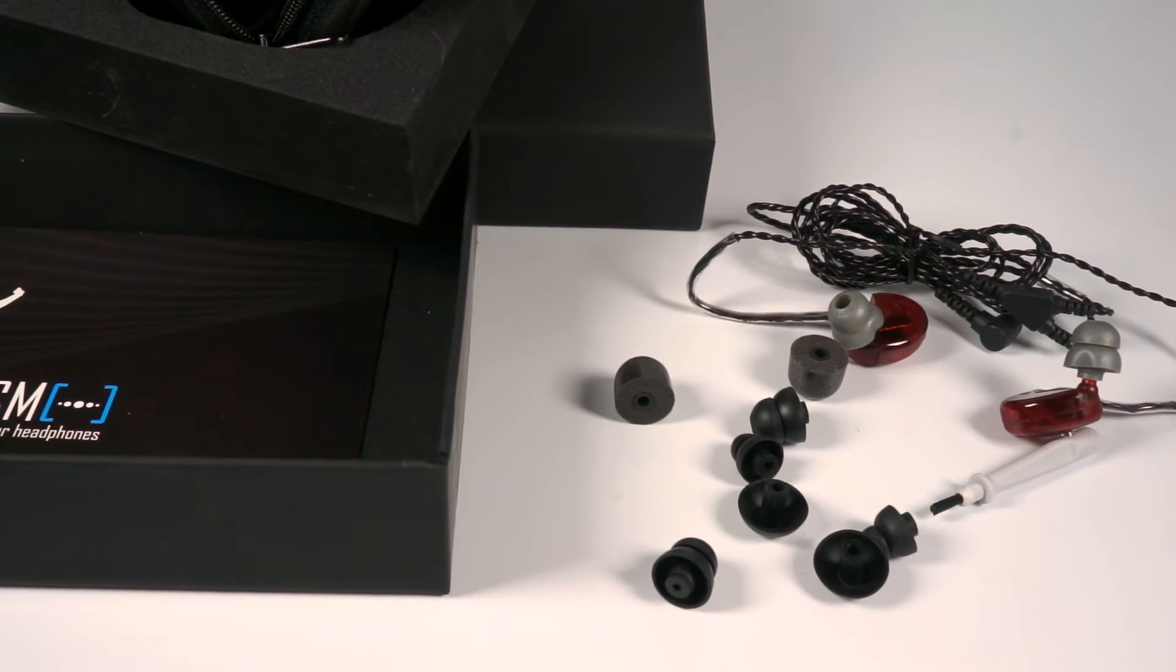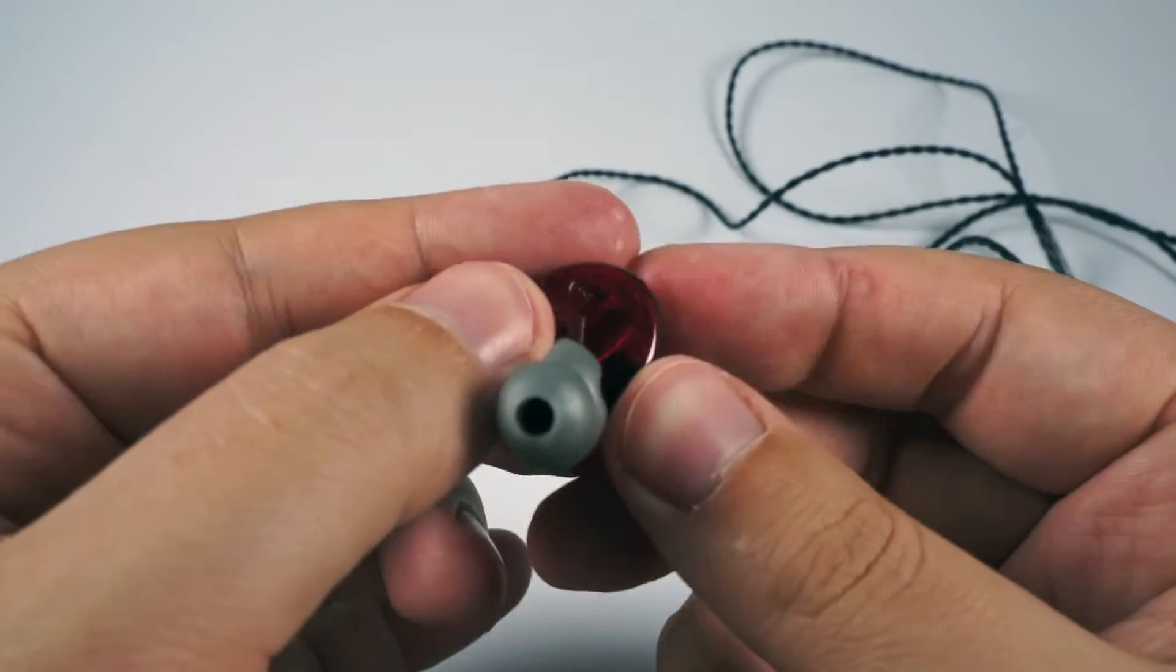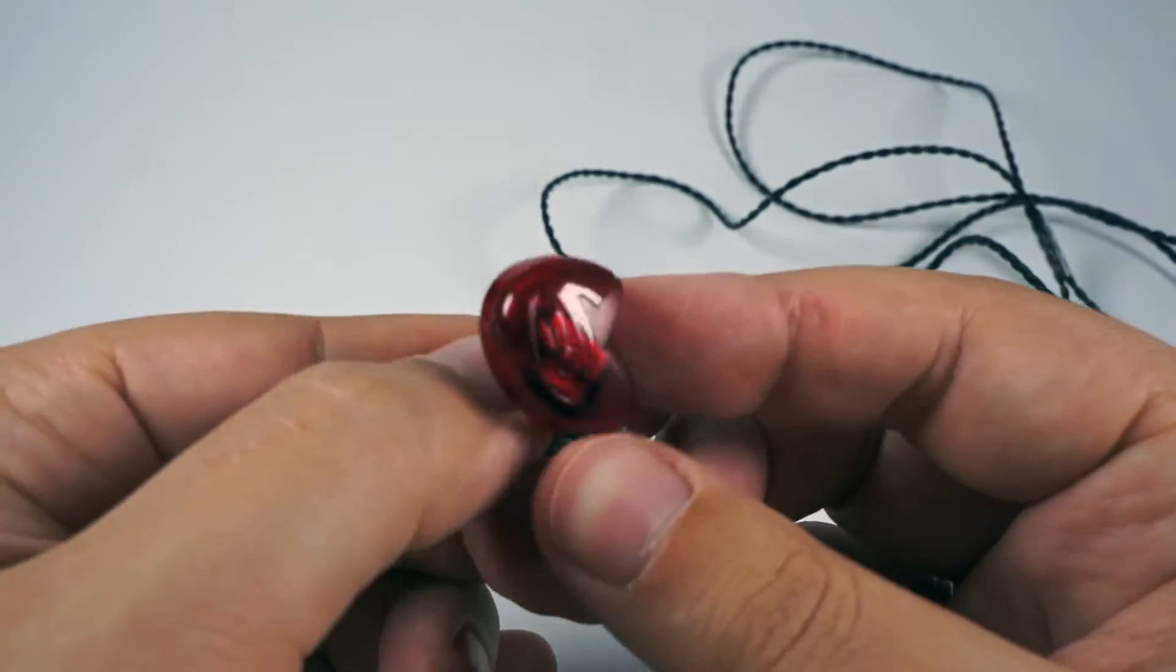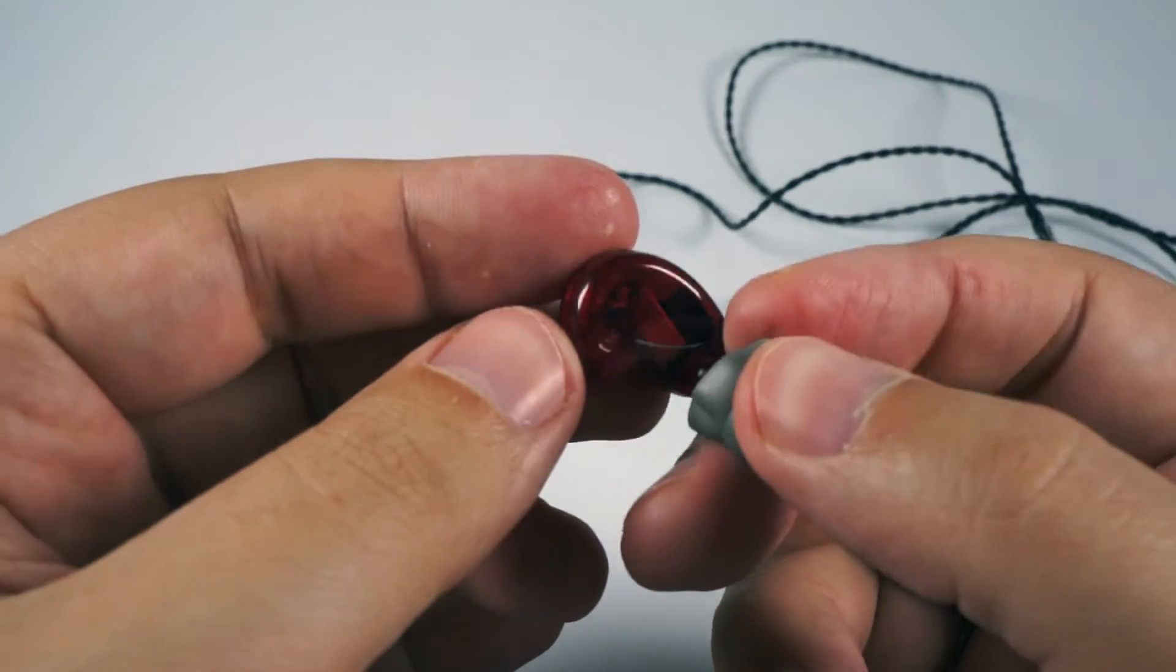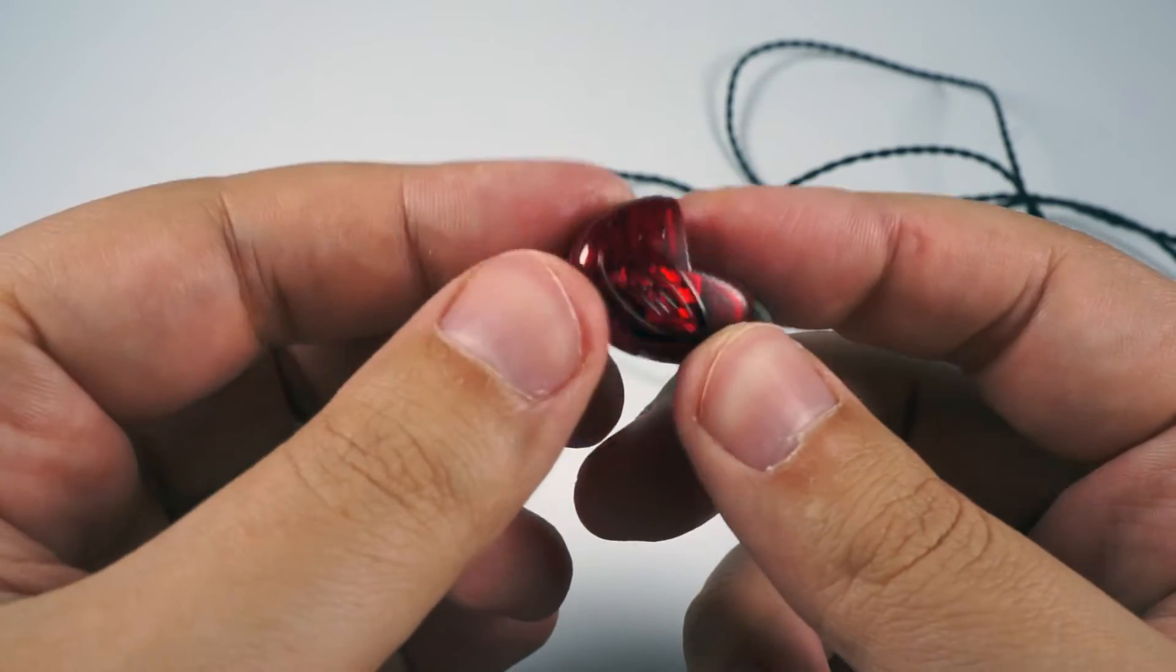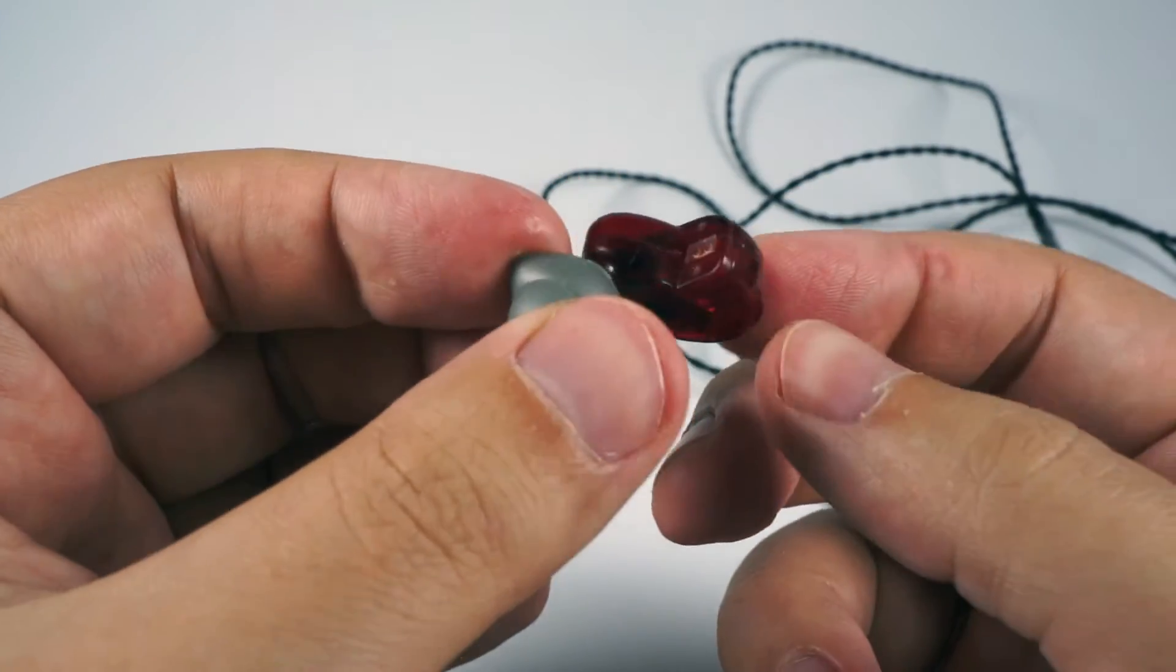As you can see, you will have everything that you need for these earphones. Here are the earphones themselves. They are made of transparent red plastic and this looks pretty interesting. You can see the internals, you can see the drivers inside of it. Actually it's looking nice.